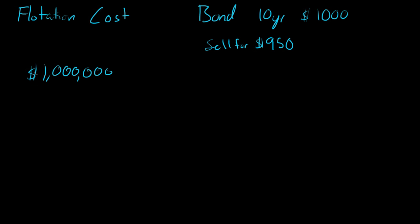Now you might think, okay, we just take the $1,000,000 and divide by $950 to find out how many bonds we need to sell. But that doesn't take into account the flotation cost. Our flotation cost — we're going to keep it simple — is 10%. That means we have to pay 10% of whatever we bring in to some other company. So we actually need to raise more than $1,000,000, because we have to pay them 10% of whatever we sell our bonds for.